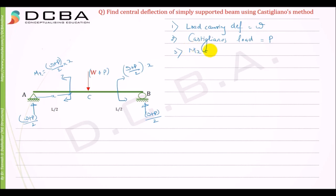Now we write the MX equation. MX is equal to W plus P by 2 into X. Then we need ∂MX/∂P, that is partial derivative of MX with respect to P, which is equal to 0 plus 1 by 2 into X, which is equal to X by 2.